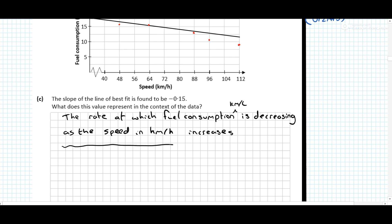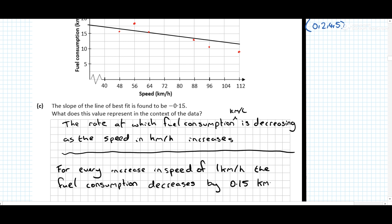So again, another way. For every increase in speed of 1 kilometer per hour, the fuel consumption decreases by 0.15 kilometers per liter. So we get less kilometers for every liter. And that is 0.35 for that.